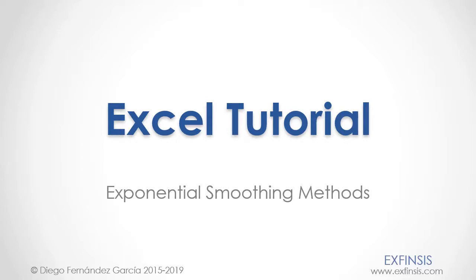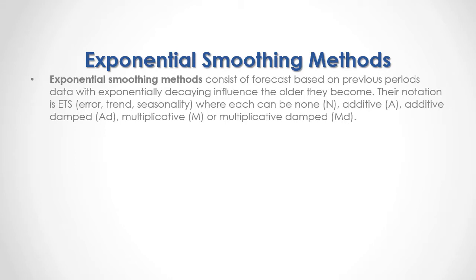Excel Tutorial: Exponential Smoothing Methods. Exponential Smoothing Methods consist of forecasts based on previous period's data with exponentially decaying influence the older they become. Their notation is ETS, which stands for Error, Trend and Seasonality, where each can be None, Additive, Additive Damping, Multiplicative or Multiplicative Damping.